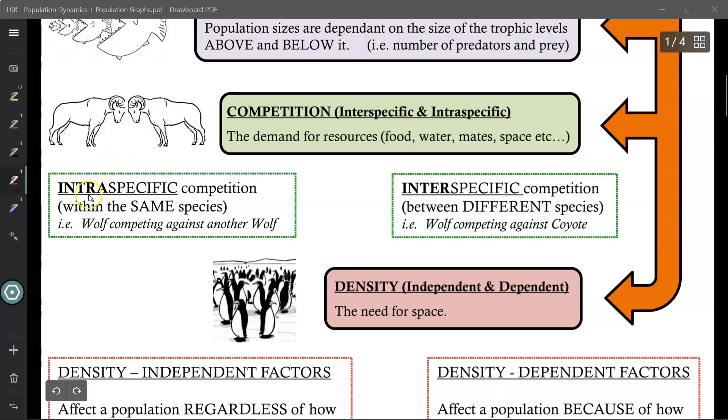Now intraspecific means competition within the same species. So if a wolf was competing with another wolf for food or for water or for mates, then that would be intraspecific competition. Interspecific competition is between different species. So maybe a wolf competing with a coyote. So they're both competing for the same food to hunt, maybe for water. Probably not mates, but definitely for space.